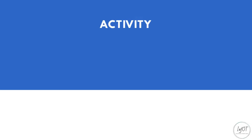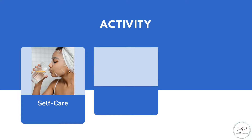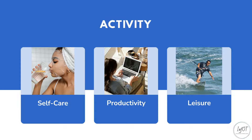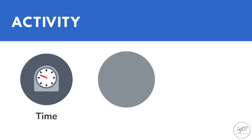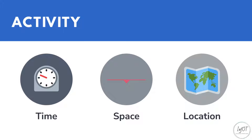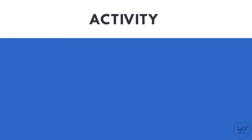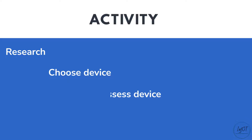Moving on to the activity domain. Activities are usually divided into three categories: self-care, productivity, and entertainment. In the Human Activity Assistive Technology model, activities are also considered by the time they need to be completed, the space they need, and the location they are being carried out. It is also important to remember that multiple activities can take place at the same time. When assessing the activity that the person wants to do with an Assistive Technology device, we are able to properly research and choose the assistive device and assess if the device works and helps the client achieve their goals.